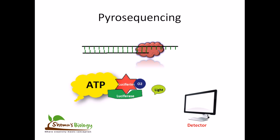The light can be detected by a detector, and the intensity of the light corresponds to the type of sequence we are dealing with.